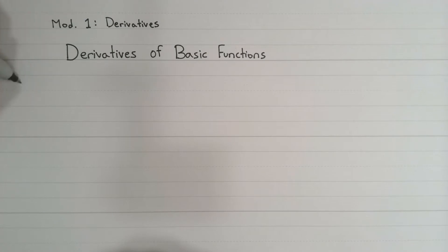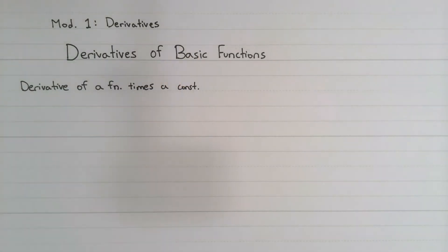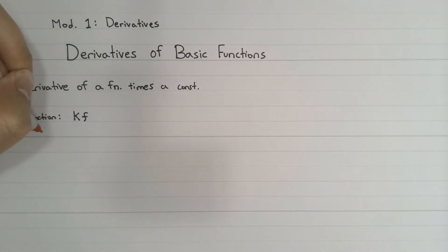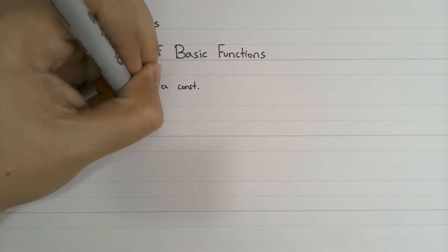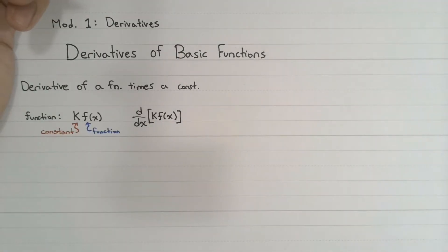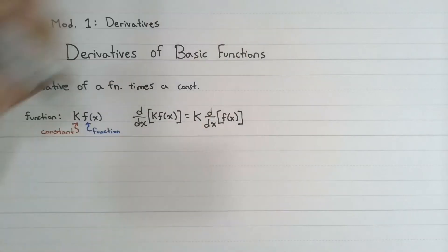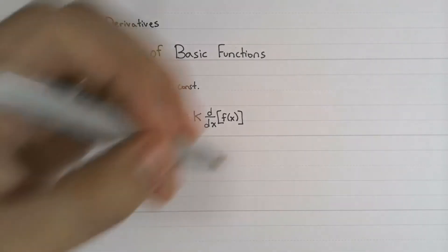Let's start with the derivative of a function multiplied by a constant. Suppose we have a function called f, and suppose that it is multiplied by a constant k. When we want to take the derivative of k·f with respect to x, we'll find that it equals k times the derivative of f with respect to x. This will be more evident when we learn about the rules of differentiation, but for now just take my word on it.